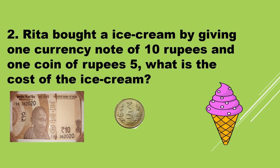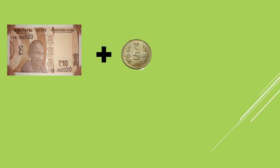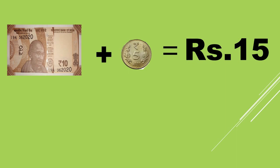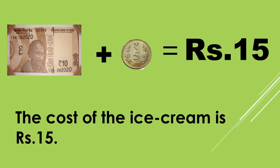Rita bought an ice cream by giving 1 currency note of Rs. 10 and 1 coin of Rs. 5. What is the cost of the ice cream? Rita paid Rs. 10 note plus Rs. 5 coin, which equals Rs. 15. So the cost of the ice cream is Rs. 15.